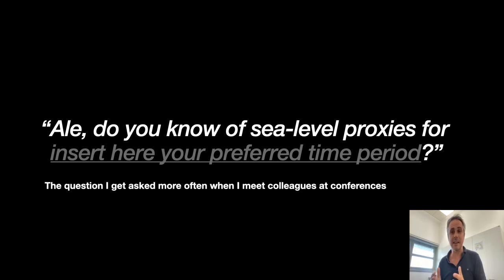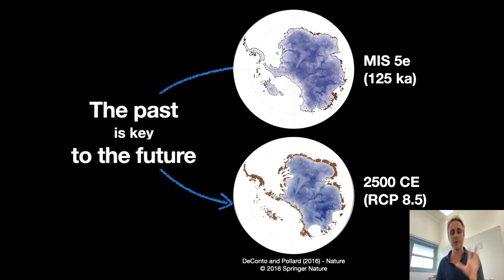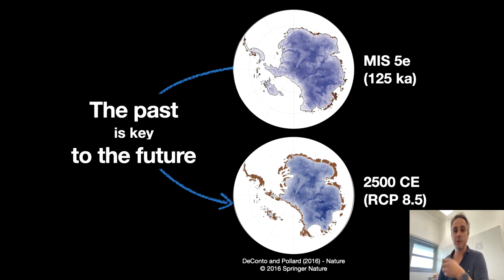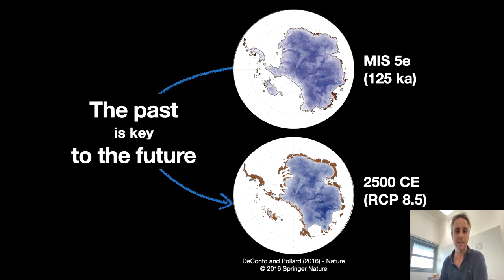I get this question because I had the luck throughout the years to work in many different places around the world and with many different people on many different time frames. We want to know that we can use past interglacials as a key to the future, and this goes into the discussion of high-end scenarios or low-likelihood scenarios that have been brought up by the last IPCC, especially including new mechanisms of ice collapse.